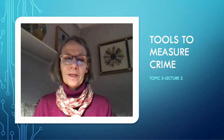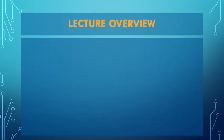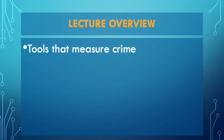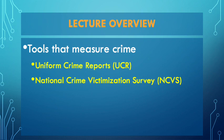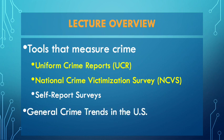Welcome to Topic Three, Lecture Two. In this lecture we're going to learn about the tools to measure crime. The textbook discusses three major tools: the Uniform Crime Report (UCR), the National Crime Victimization Survey, and self-report surveys. We'll cover the UCR and NCVS in this lecture, then briefly touch on general crime trends, including a comparison between our perception of crime and the reality of crime in the United States.